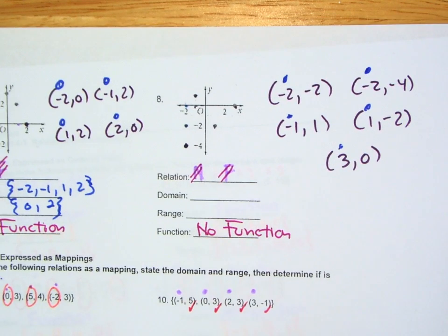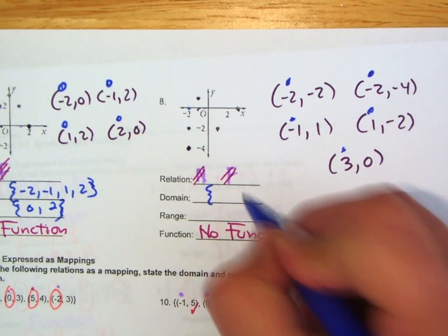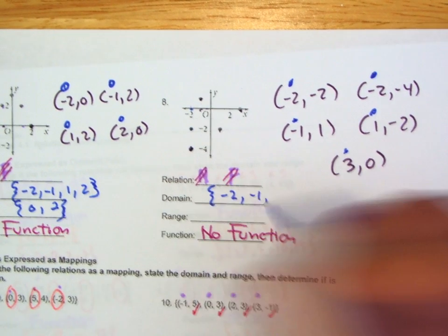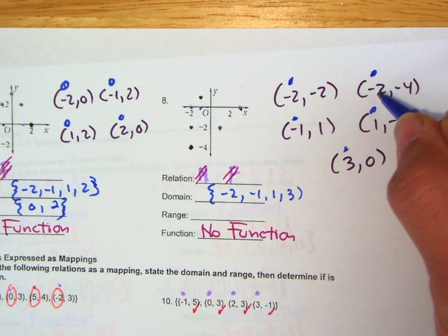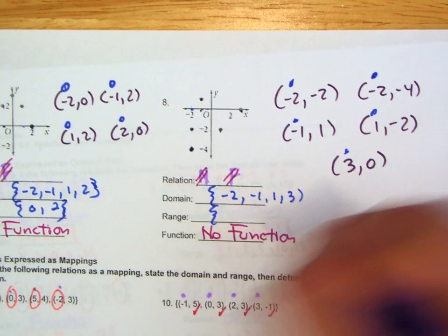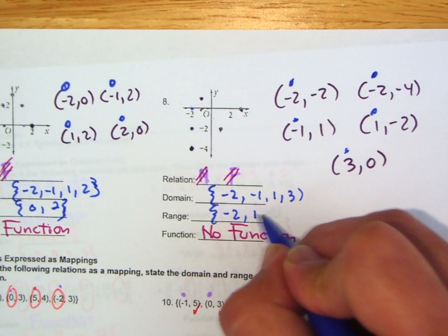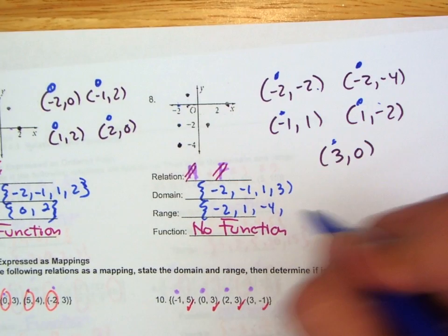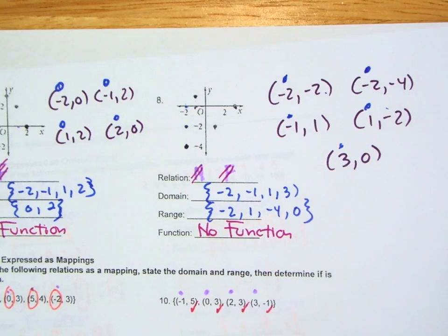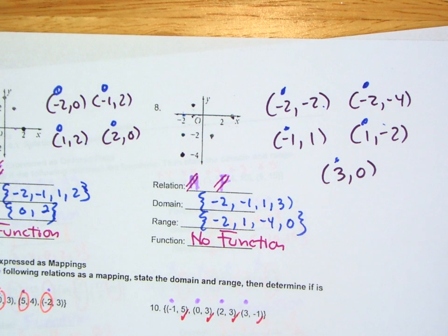Here we go. Domain. Range. Got to check for repeats — repeat, no. All right, that's it. We're done. That was it for today. Pretty good. Nice job. Make sure you upload it. Later.